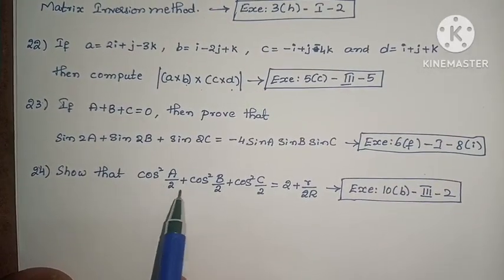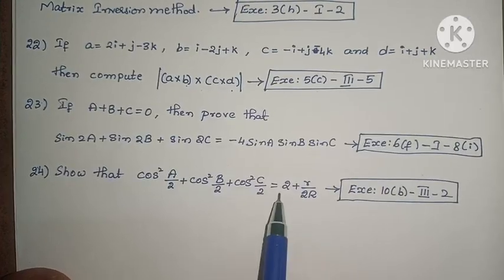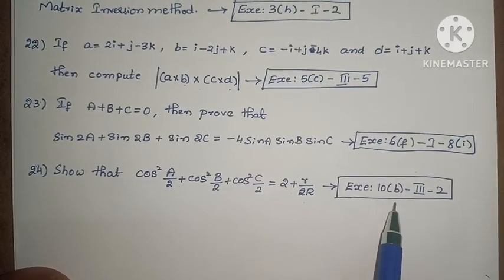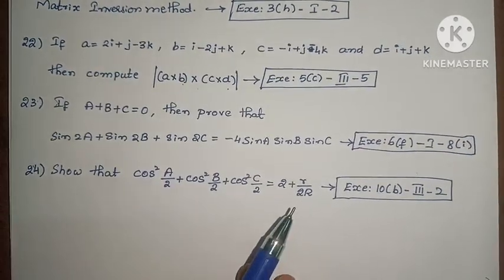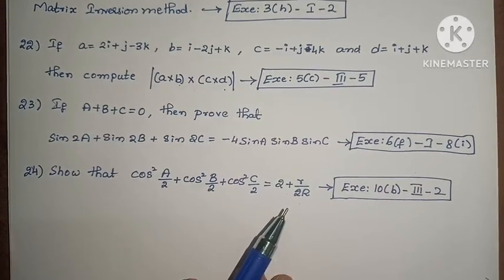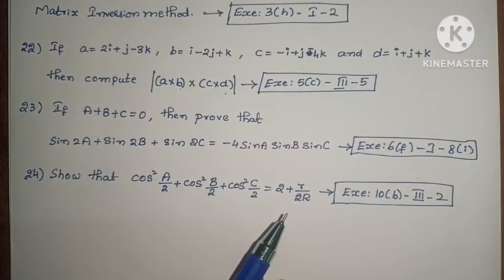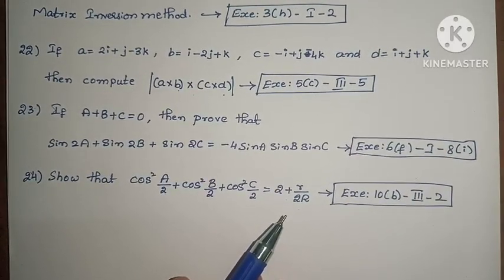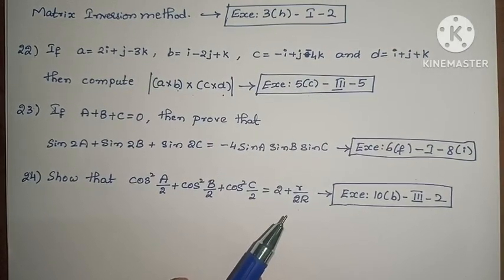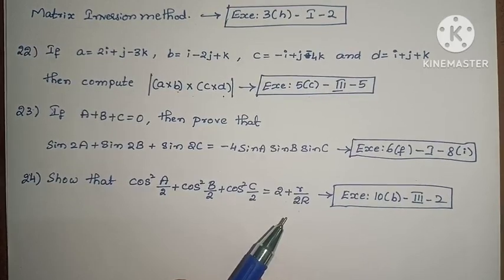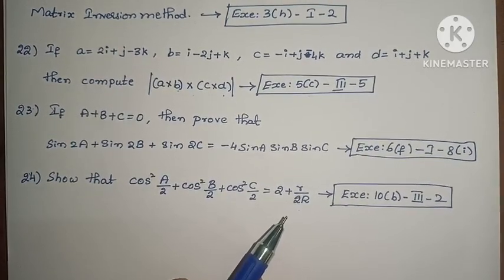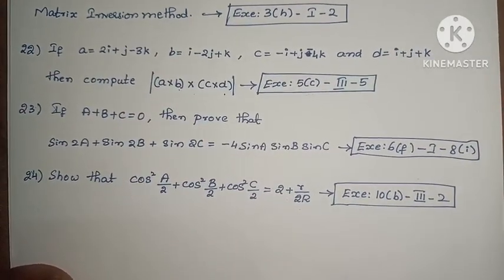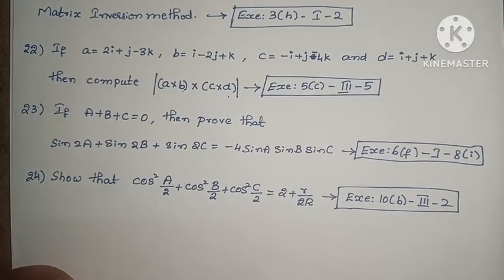Next, show that cos squared A by 2 plus cos squared B by 2 plus cos squared C by 2 equals 2 plus small r by 2 into capital R. Exercise 10, Third Roman, Second one. Next, model paper 4 is complete. If you want the solutions to these problems, check the important problems videos where I explain the same problems. If you missed any problems, you can try them on your own. If you need help with another problem, please let me know. Please subscribe to the channel. Thank you.